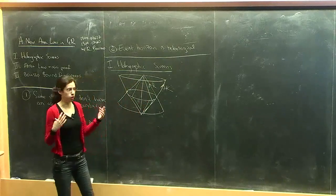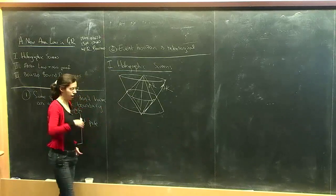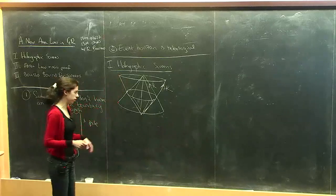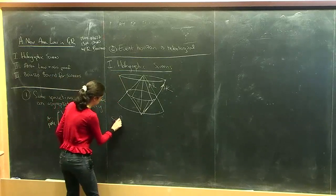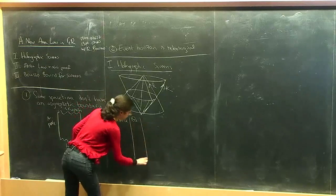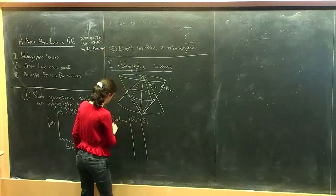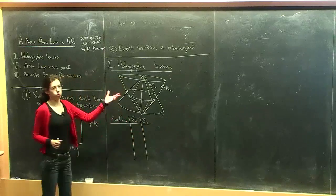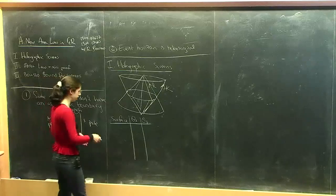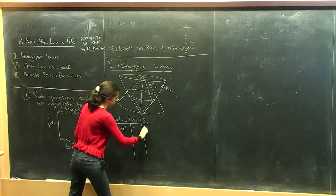I'll jot down a table classifying different surfaces based on the expansions of null geodesics. The surface type depends on the expansion in the L direction (inwards) and in the K direction (outwards). For a normal surface, what we shoot outwards is expanding and what we shoot inwards is contracting — so these are strictly negative inwards and strictly positive outwards.